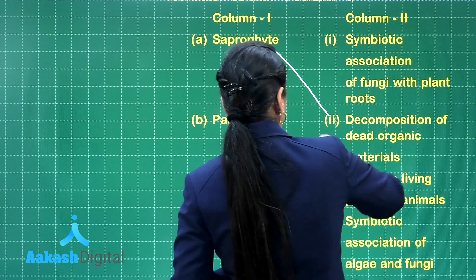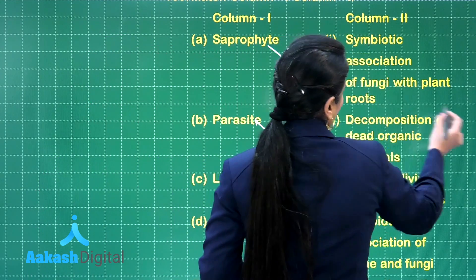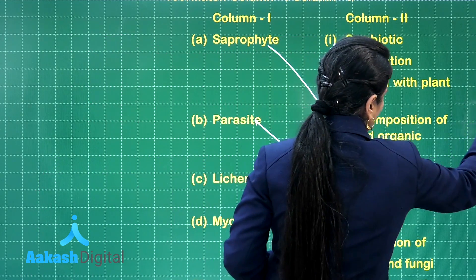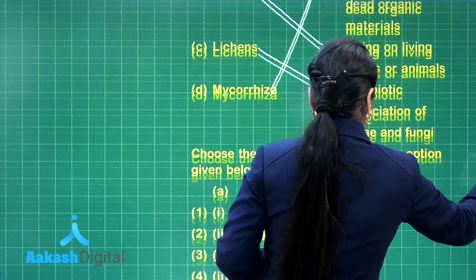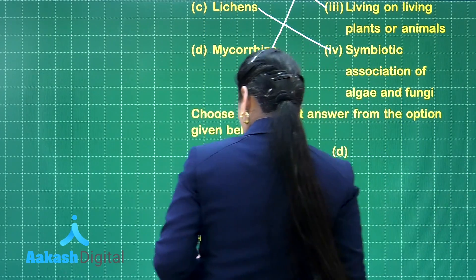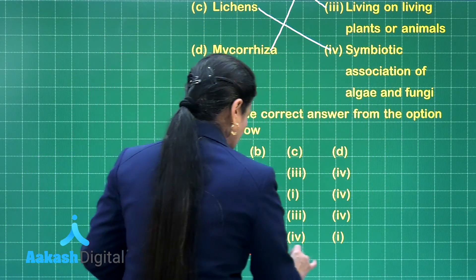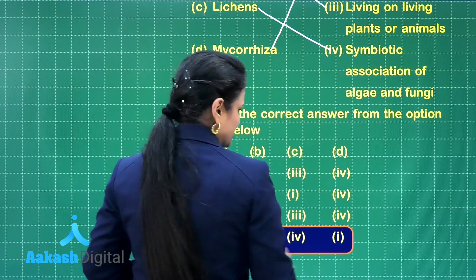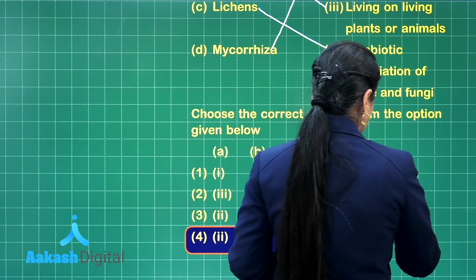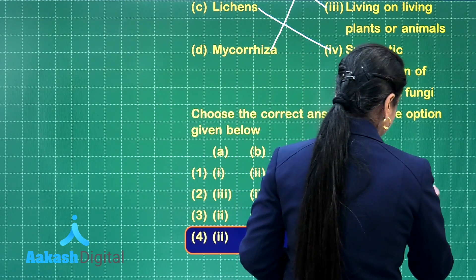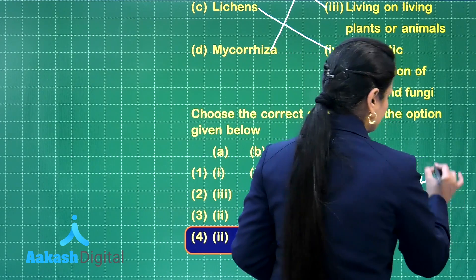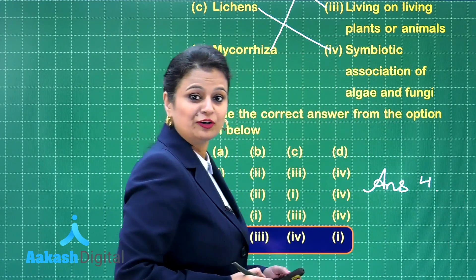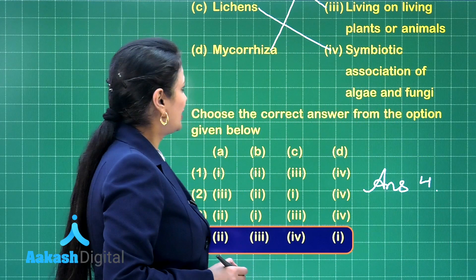Mycorrhiza represents a symbiotic association of fungi with the roots of higher plants, so it goes with one. The option associated with this matching is the fourth one — that is our right answer.